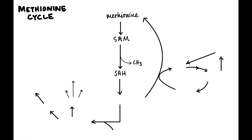SAH then gets converted into homocysteine. You don't need to know any of the enzymes in that process. What you should know is that SAM is an intermediate and that it's a methyl donor.